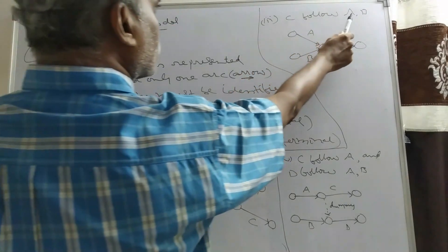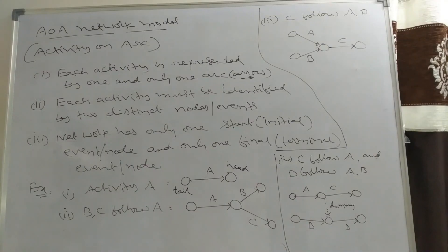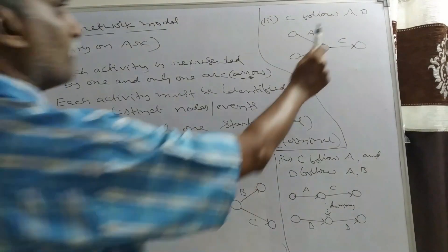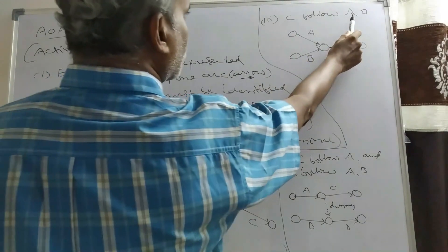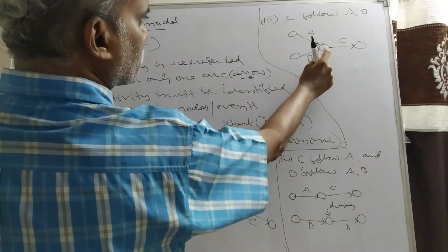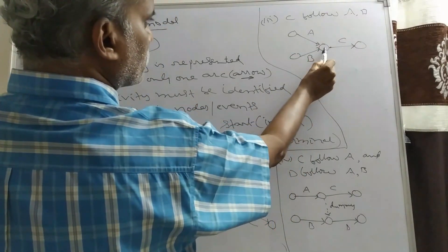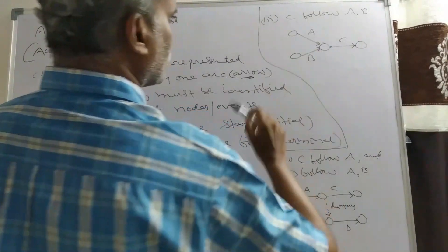Third example: C follows A and B, meaning after completion of both A and B, C starts. Draw activities A and B; one node represents the completion of both A and B. From that node, C starts.